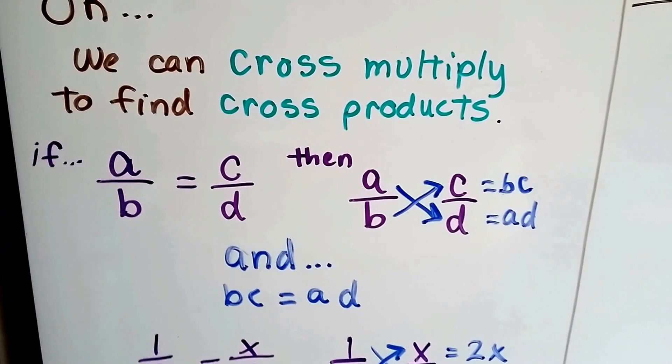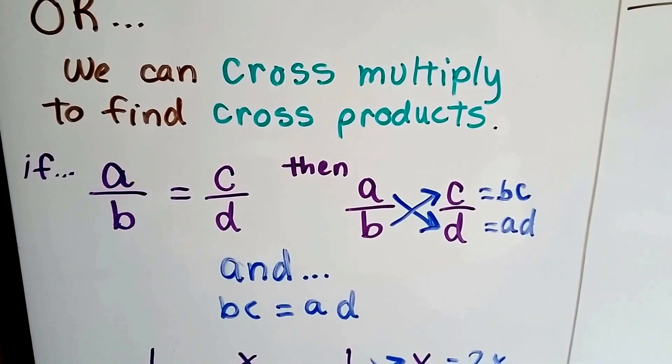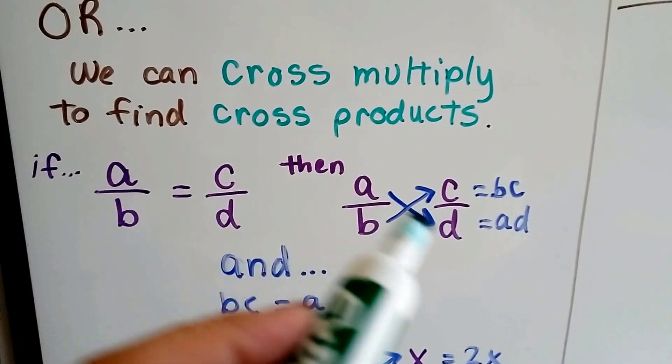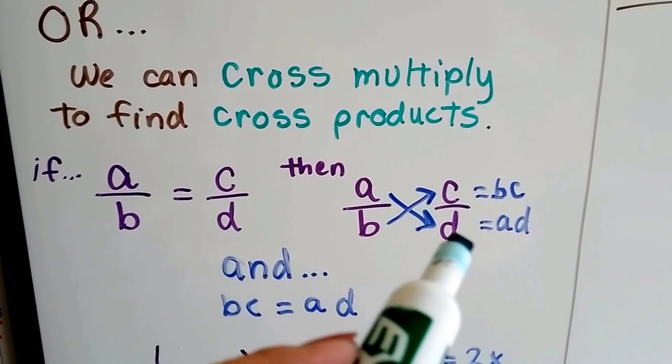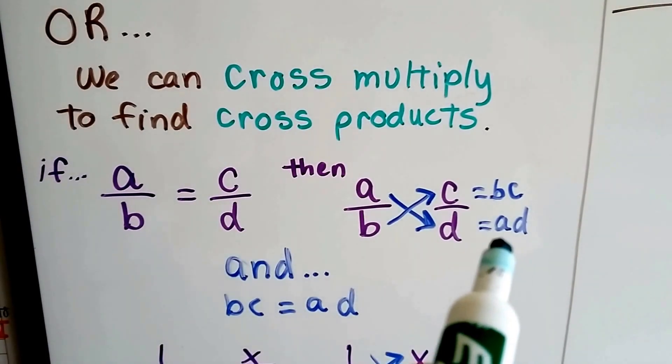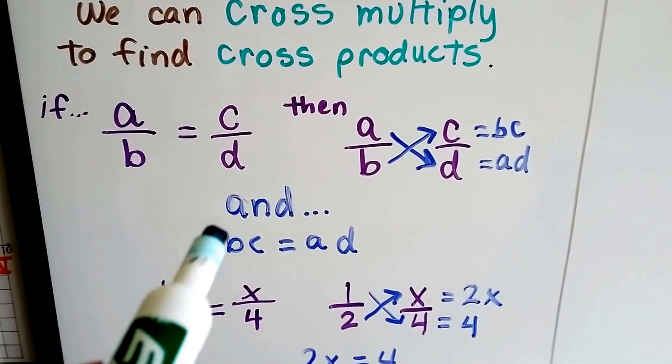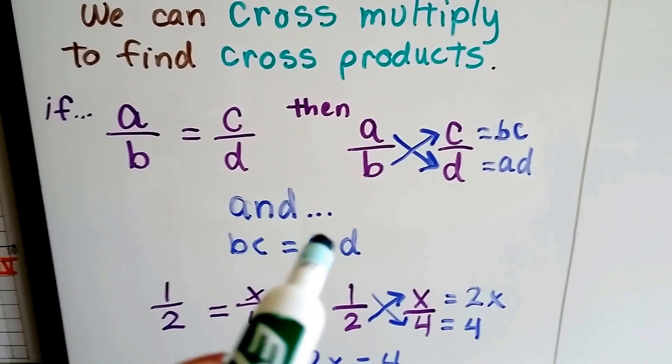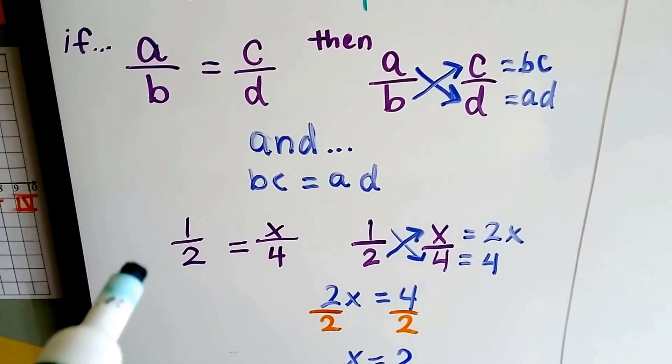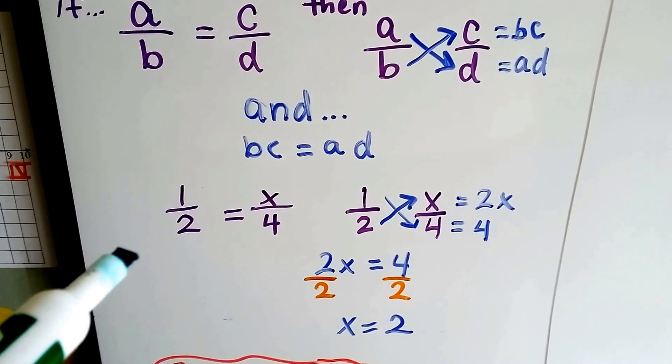So if we have two ratios, a over b and c over d, then we can multiply diagonally across, the a to the d and the b to the c. This one will equal bc, this one will equal ad, and the bc and the ad are going to equal each other. So let's put some numbers in and see how that would work.